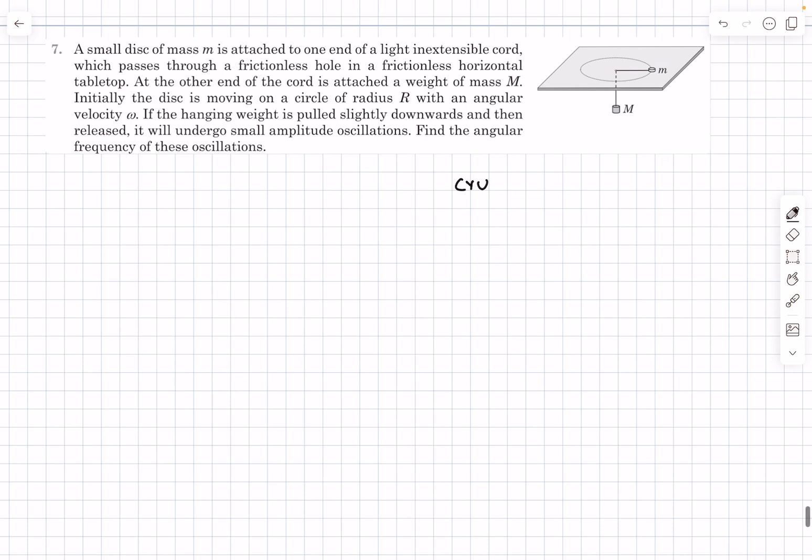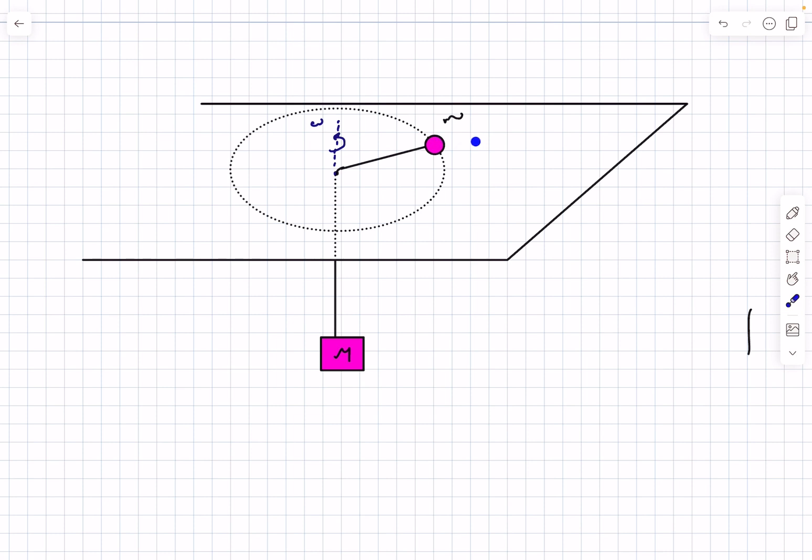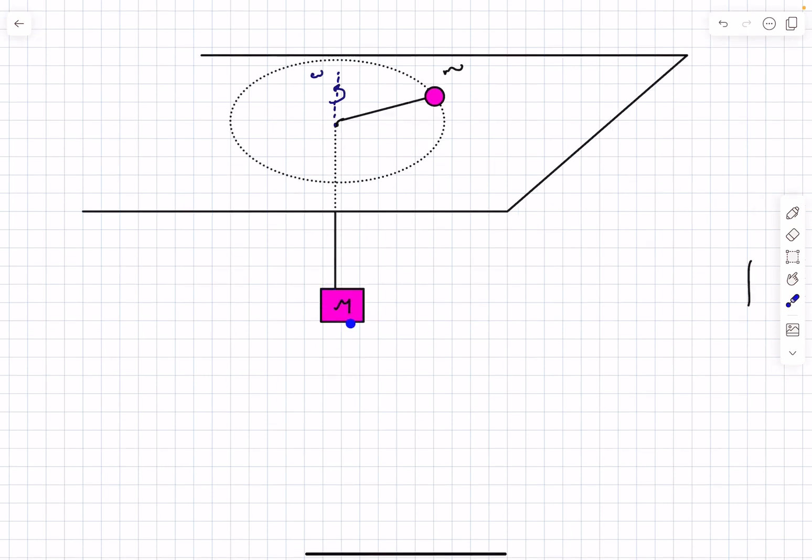Okay, so let's begin with the problem. This is a rough diagram of the situation. If we consider the equilibrium situation, the mass m over here is rotating in a circle and this mass capital M is remaining in equilibrium. So let's try to write down the equilibrium force condition.